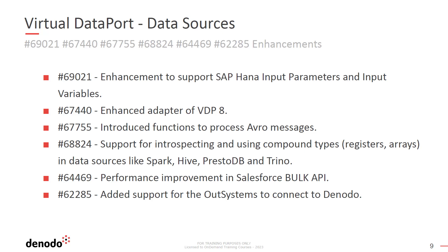New functions avro-2-json and json-2-avro have been introduced to deal with Avro messages, useful for supporting messages with binary data in the Kafka listener. Introspection and usage of compound data types like registers and arrays are now supported in data sources like Spark, Hive, PrestoDB, and Trino. Performance in the Salesforce bulk API has been improved by retrieving responses in parallel and compressing them instead of doing it sequentially. OutSystems will now be able to connect to the Denodo platform using its PostgreSQL connector with read-only access.